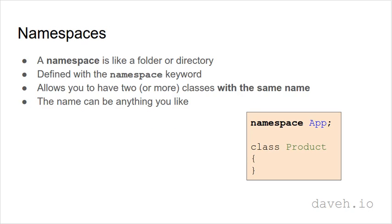The solution is to use namespaces. A namespace is like a folder or directory. It's defined with the namespace keyword at the top of the class file, followed by the name, which can be anything you like. And this allows you to have two or more classes that have the same name.